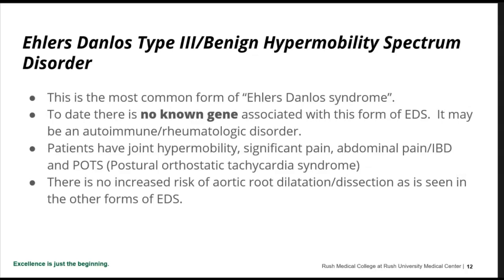There is more pain than in patients with type 1 who dislocate joints. They usually don't fully dislocate joints — instead they have joint subluxation where it pops in and out. They also have abdominal pain, inflammatory bowel disease, and postural orthostatic tachycardia or POTS — so when they stand up, they feel faint. Females seem far more affected than males, and when they go through puberty, they can become non-functional because of the POTS and severe abdominal pain. There's really no increased risk of aortic root dilatation or dissection.